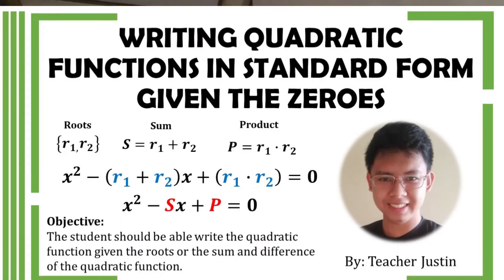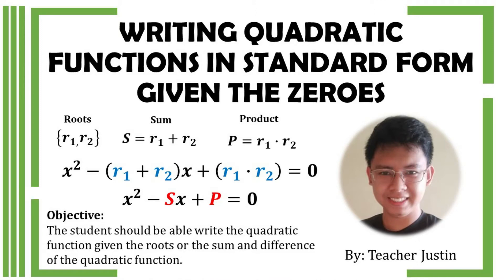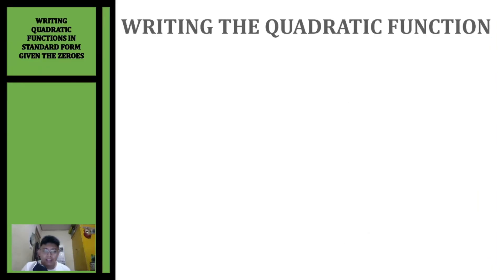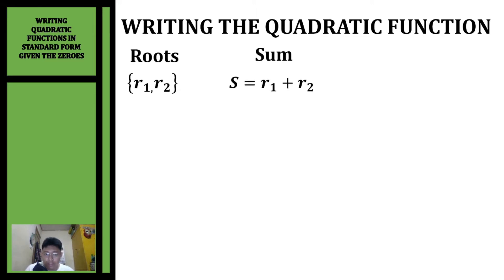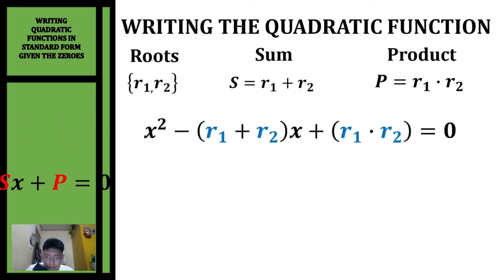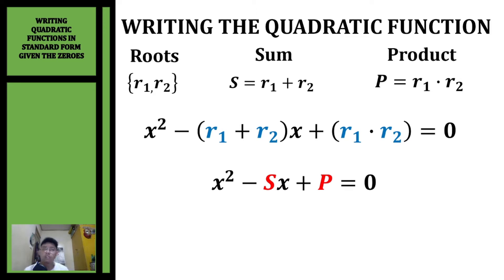Good day everyone, welcome to Math with Teacher Justin. On today's topic, we're going to write quadratic functions in standard form given the zeros of your quadratic functions. All we need to do is get the sum and the product of the roots, and then apply this formula based on our previous discussion on the relationship of the roots and the coefficients: x squared minus the sum of the roots times x plus the product of the roots equals zero.